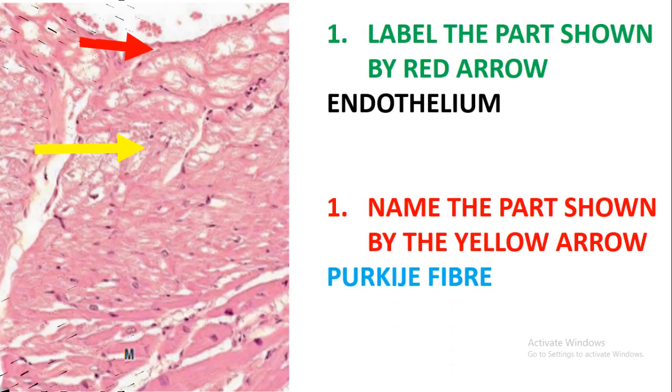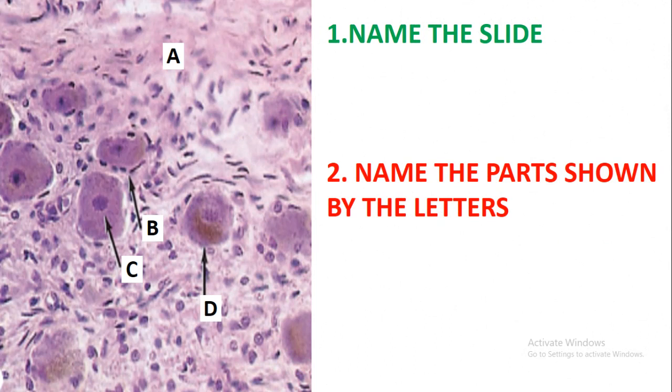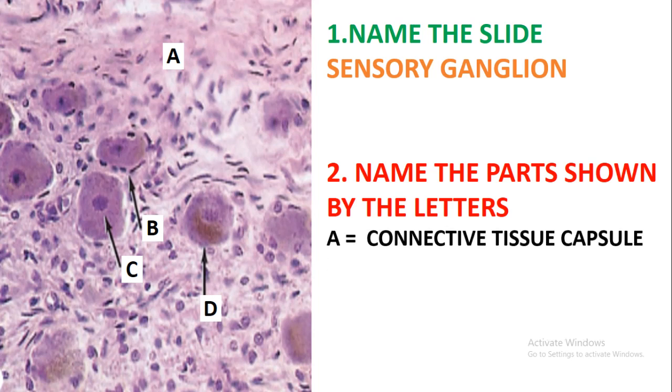Let's move on and look at the next question: name the slide. If you look at this slide, this is simply the sensory ganglion. Name the part shown by the letters. A is showing the connective tissue.